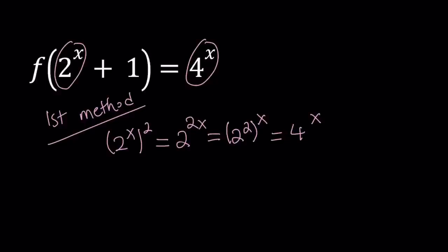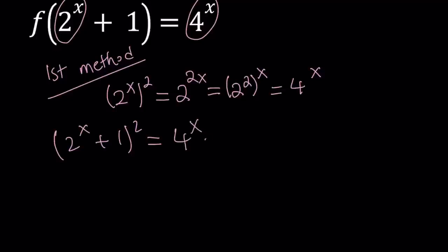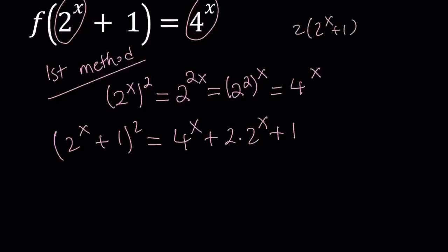Now let's go ahead and square what's inside the parentheses, which is 2 to the power x plus 1. If you square 2 to the power x plus 1, using the (a+b)² formula, that gives us a squared plus 2ab plus b squared. Now notice that the middle term involves 2 times 2 to the power x, but to make it factorable and get 2 to the power x plus 1, we basically need 2 times 2 to the power x plus 1, which is 2 times 2 to the power x plus 2. So we just need to add a 2 and then subtract a 2.